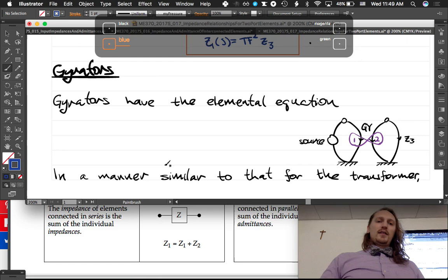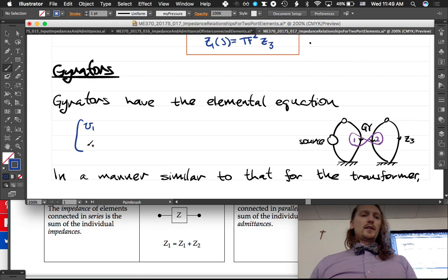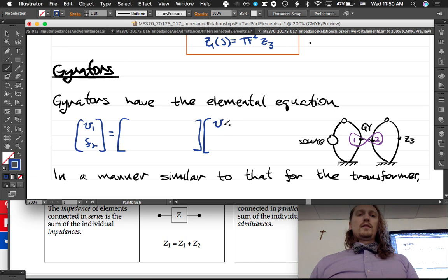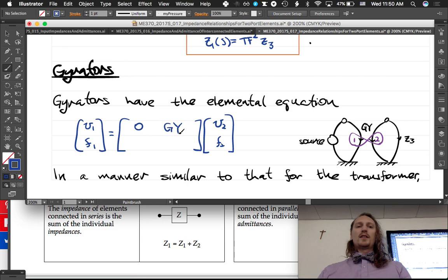Gyrators have the elemental equation—it's very analogous, right? So v1, f2 are related to the v2 and f2, the across and through variable. Oh yeah, thanks guys. Good call, good call, keeping me honest. This is when I do those video lectures, it's hard, nobody's keeping me honest.